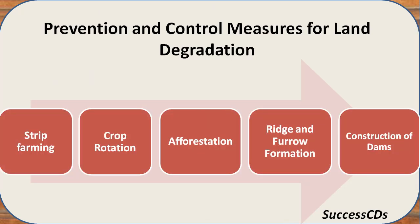How can we prevent land degradation? There are various ways to conserve our land, like afforestation and proper farming techniques. The measures include: strip farming, crop rotation — which is growing alternate crops so the soil doesn't get deficient in one particular nutrient — afforestation by planting more trees, ridge and furrow formation, and construction of dams to check water flow.